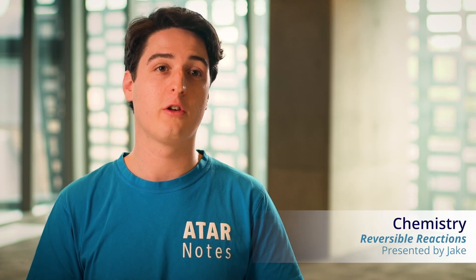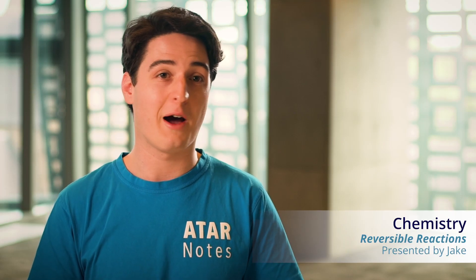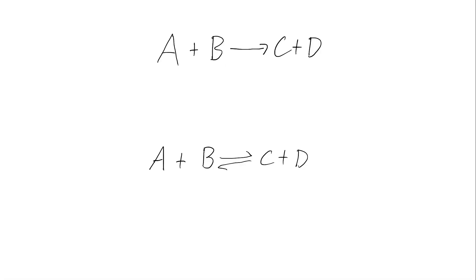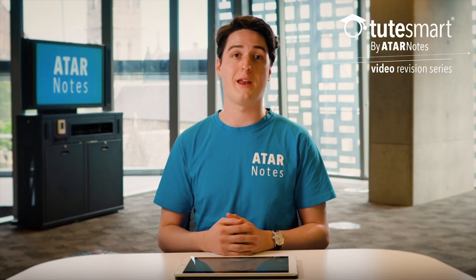In the preliminary course, you will have looked at about a million different chemical reactions. All of these reactions would have taken the form A plus B becoming C plus D. And that's what you can see in the first equation here. It's something that you'll be very, very familiar with by now.